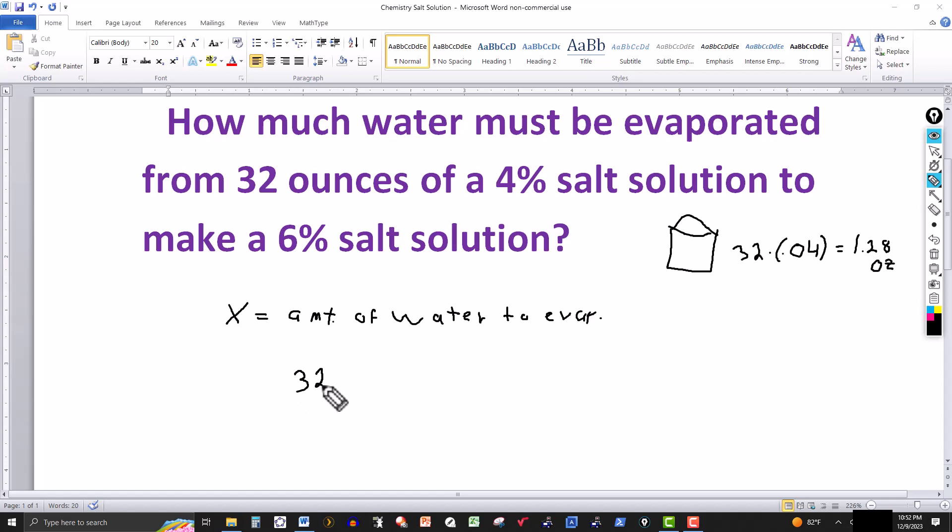So that means we have 32 ounces to start off with and then remove the water, and this is the amount of the mixture or solution that's left. We want it to be 6% salt, so we multiply this by 0.06, changing the percent to a decimal. This will give me the amount of salt that this solution will have.